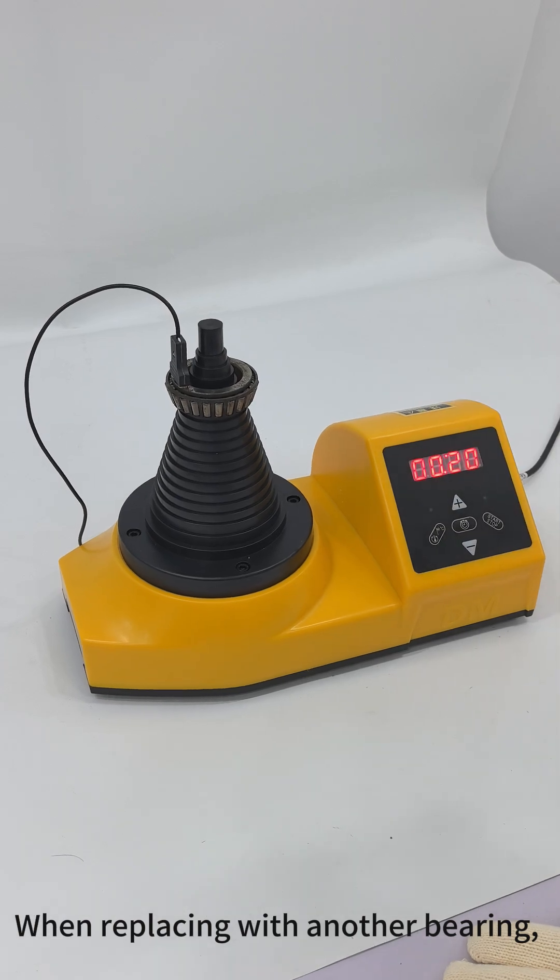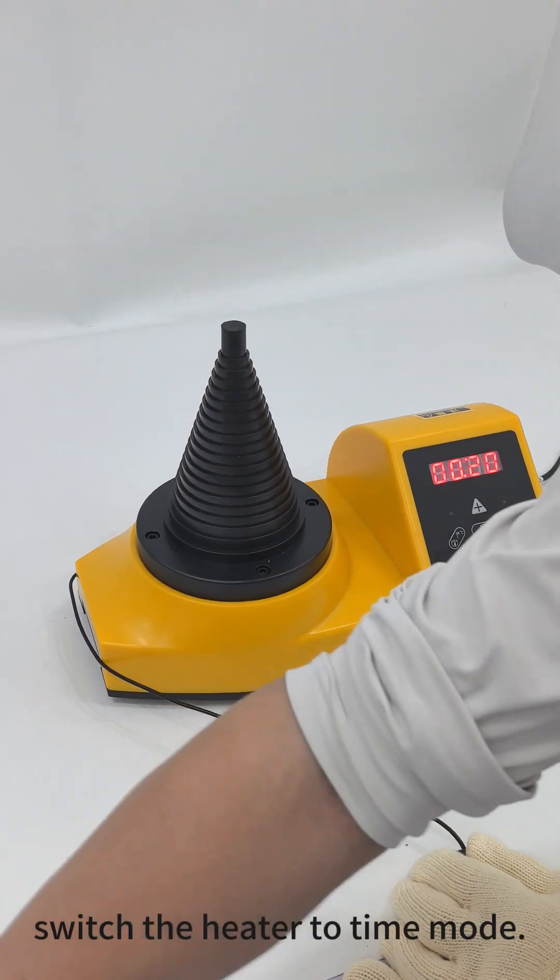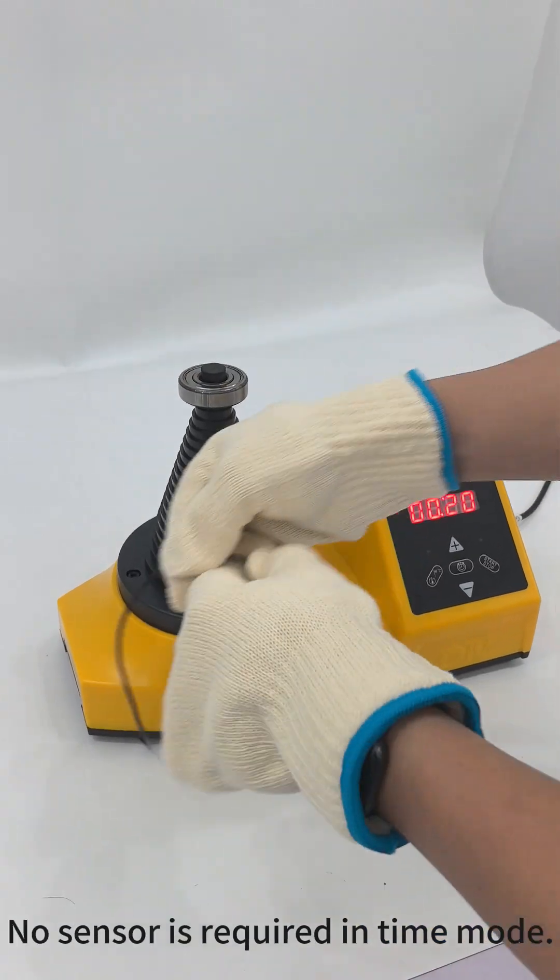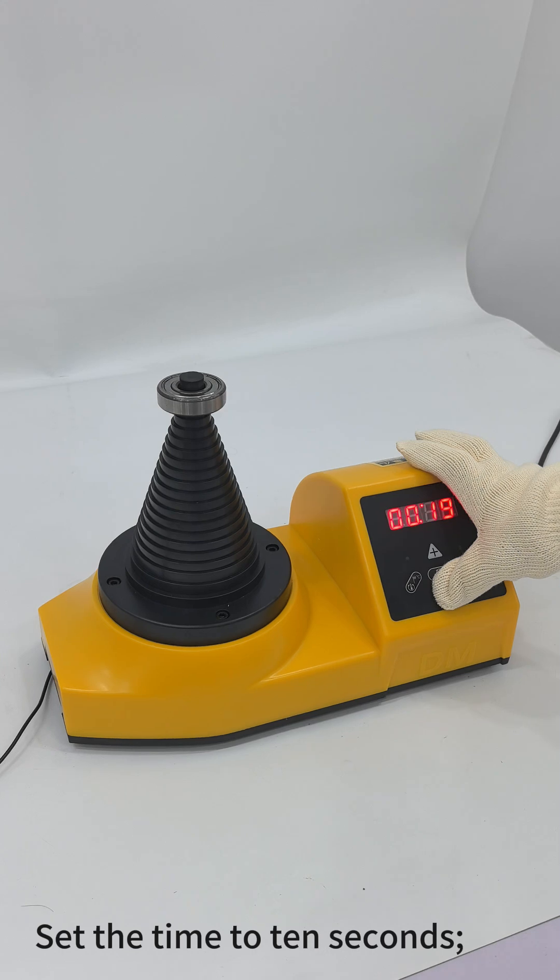When replacing with another bearing, switch the heater to time mode. No sensor is required in time mode. Set the time to 10 seconds.